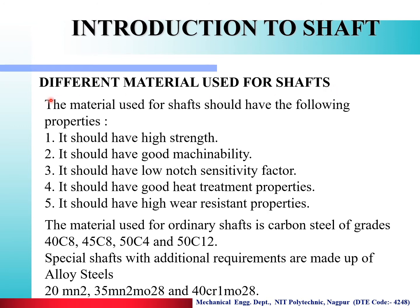The material used for shaft should have the following properties: high strength, good machinability, low notch sensitivity factor, good heat treatment properties such as annealing and tempering, and high wear resistance. The material used for ordinary shafts is carbon steel grades 40C8, 45C8, 50C4 and 50C12. Special shafts with additional requirements are made of alloy steel grades 20MN2, 35MN2, MO28 and 40CR1 MO28.